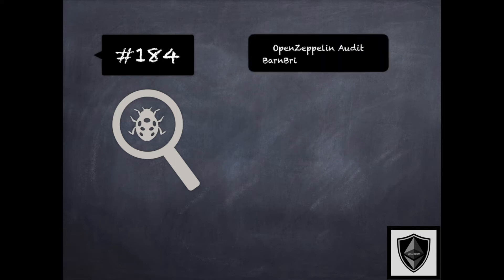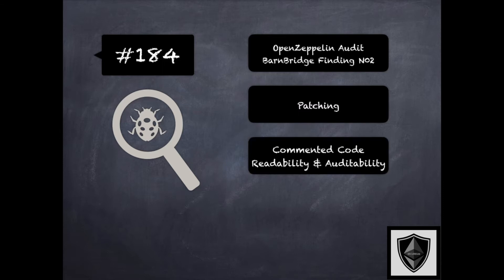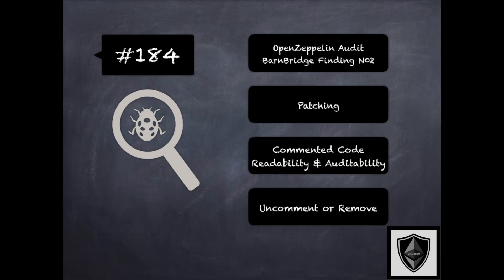Finding 184 is another finding from OpenZeppelin's audit of Barnbridge, where the concern was about commented-out code — the code base had lines of code that had been commented out. This could lead to confusion and affected code readability and auditability. The recommendation was to consider removing commented-out lines of code that were no longer needed. This is related to comments in 154 and clarity issues in 188 of the security pitfalls and best practices 201 module.